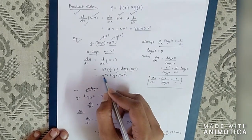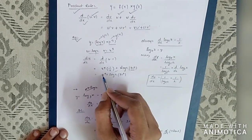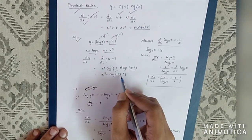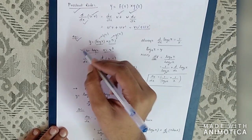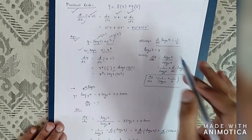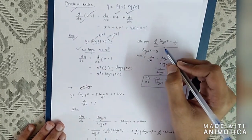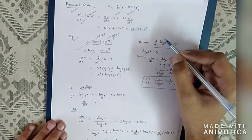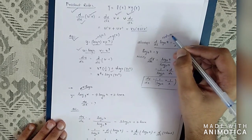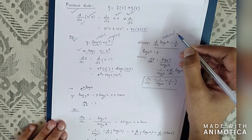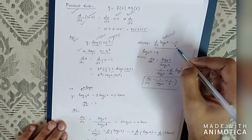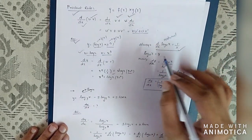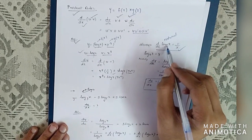If we solve it, we can cancel: x cubed times 1/x gives x squared, plus log(x) into 3x squared. One important note: in this problem, log(x) is to the base e — that is the natural log. The differentiation formula for natural log is 1/x.